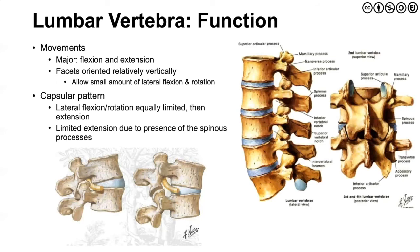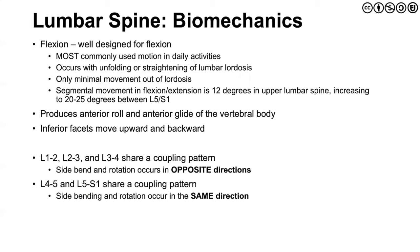Looking at the function and movements, the first would be flexion and extension — the major movements that occur in the sagittal plane. Part of why those are so major is because the facets are oriented in a more vertical, 90-degree fashion. Lateral flexion and rotation are less here; this really occurs in the thoracolumbar spine. As we move into the lower lumbar spine — specifically L3-4, L4-5, and L5-S1 — it's particularly set up for sagittal plane flexion and extension. Our capsular pattern is that both lateral flexion and rotation are equally limited, and it's really the presence of the spinous processes that limits extension more than anything.